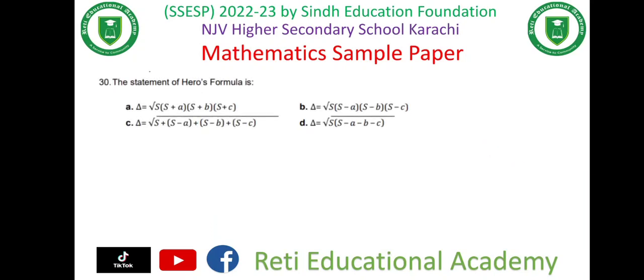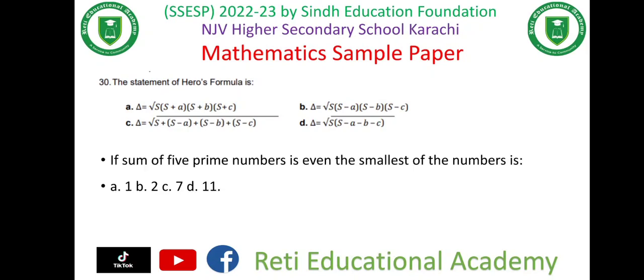Question number 30: the statement of Heron's formula is given as options (a), (b), (c), (d), and the right option is (c). Question number three: if the sum of five prime numbers is even, the smallest of the numbers is...